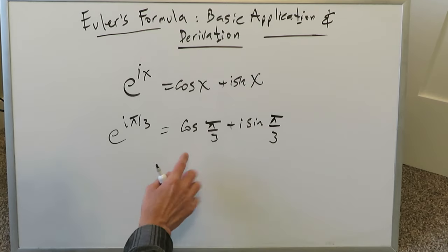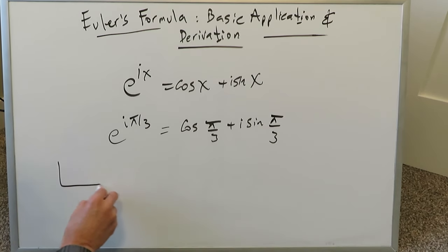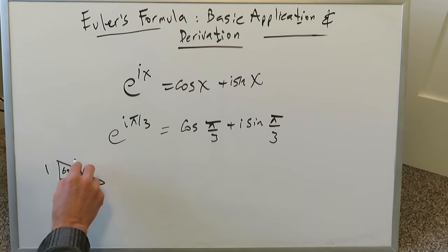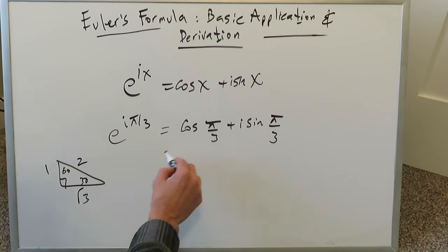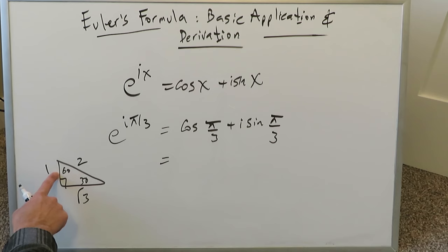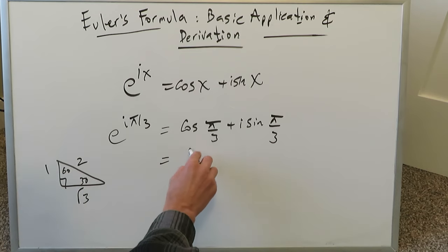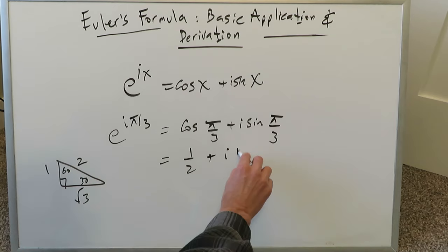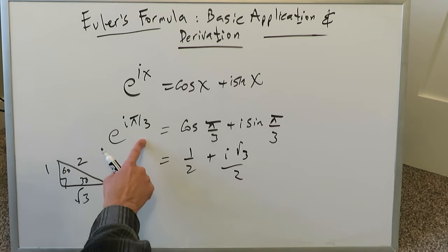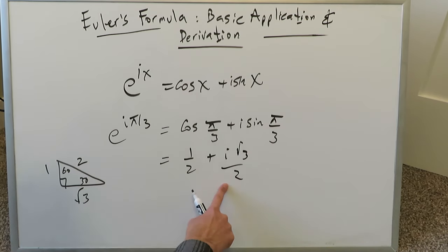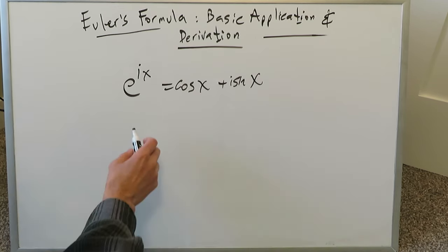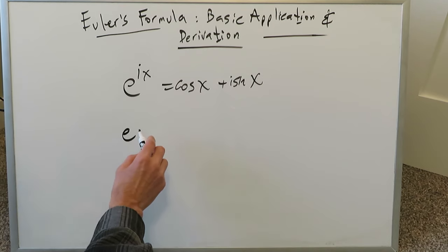When you solve this using the trigonometric ratios — a 30-60-90 triangle — cosine(π/3), which is cosine 60, is equal to 1/2, plus i times sine 60, which is √3/2. And this right here is the result presented in complex form.